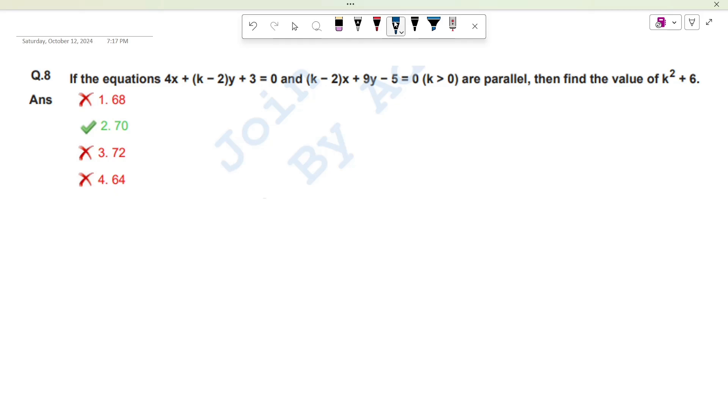If the equation 4x plus k minus 2 into y plus 3 is equal to 0 and another equation, k minus 2 into x plus 9y minus 5 is equal to 0, in which k is greater than 0 and parallel.